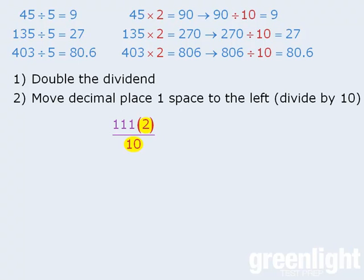Now notice that if we simplify 2 over 10 here, we get the following. So taking 111 and doubling it, and then dividing by 10, is the same as taking 111 and dividing it by 5.